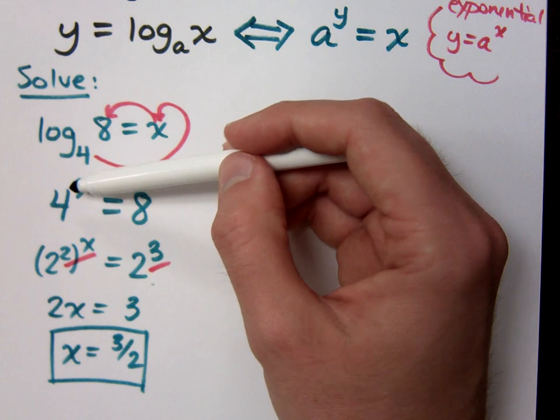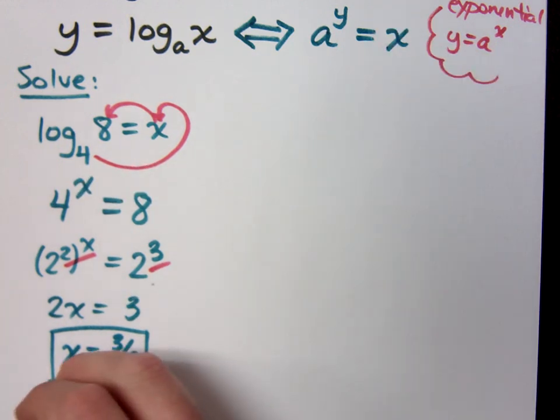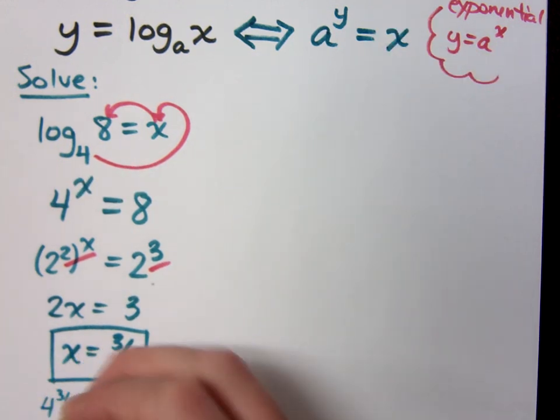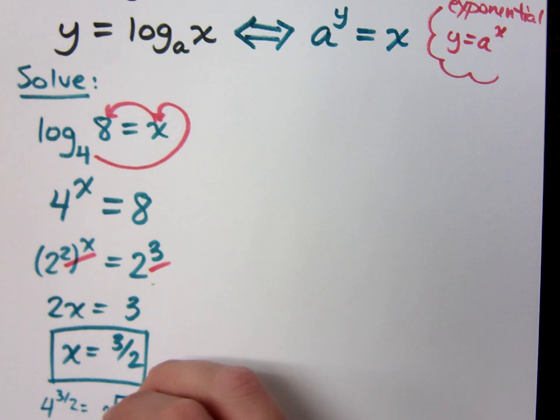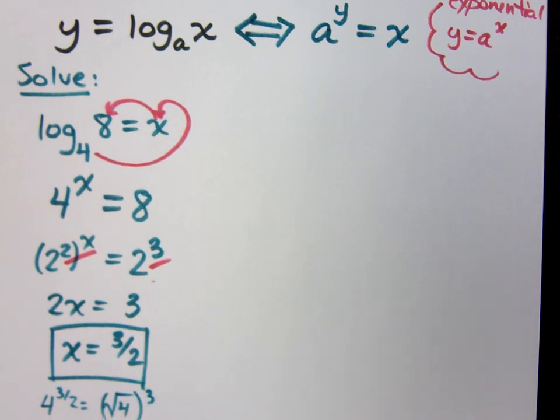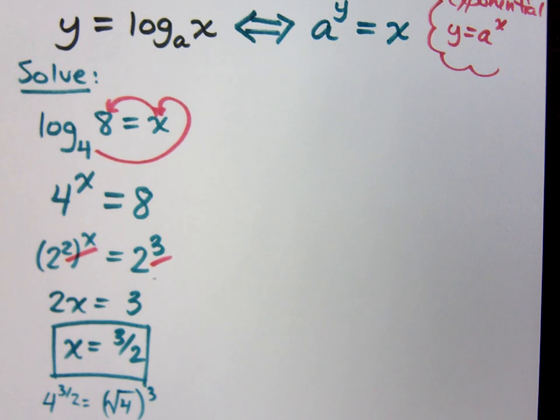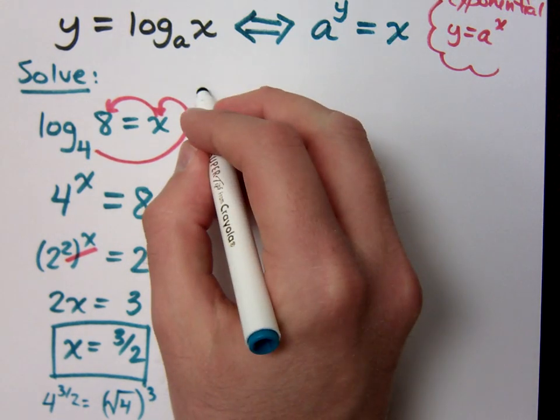So if I actually look at 4 to the 3 halves, that means the square root of 4 to the 3rd. Doesn't that give you 8? It all works out so splendidly.